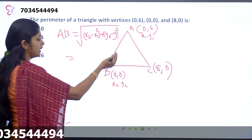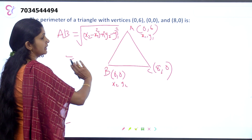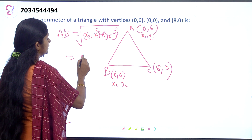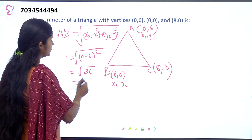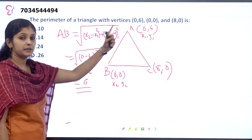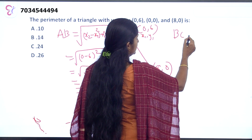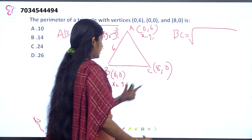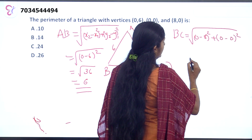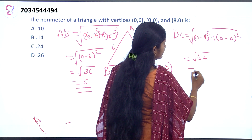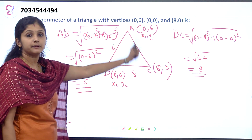For AB: substituting x1=0, y1=6, x2=0, y2=0 — we get root of (0−0)² + (0−6)² equals root of 36, so AB equals 6. For BC: substituting gives root of (0−8)² + (0−0)² equals root of 64, so BC equals 8. For AC: (8−0)² + (0−6)² equals 64 plus 36 equals 100, so AC equals 10.